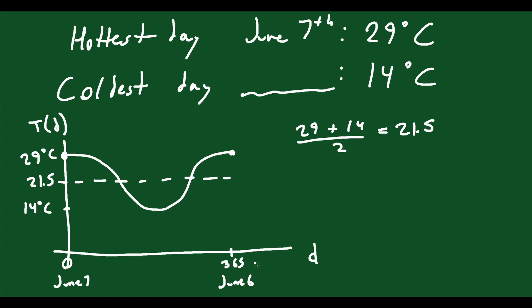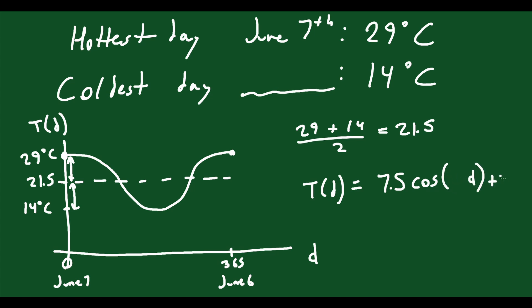Now we can figure out the equation. T(D) = amplitude × cos(kD) + 21.5. The amplitude is the distance from 14 to 21.5, which is 7.5, and from 21.5 to 29 is also 7.5. It's clearly a cosine function since we start at the maximum. For k: k = 360 / period = 360 / 365, which reduces to 72/73. So the equation is T(D) = 7.5 cos(72/73 · D) + 21.5. That value 72/73 converts the number of days into a degree that the cosine function can understand.